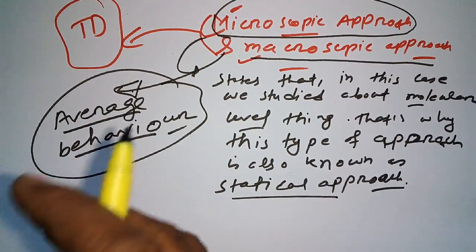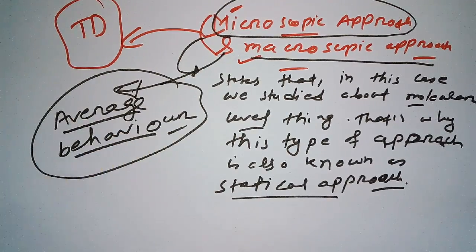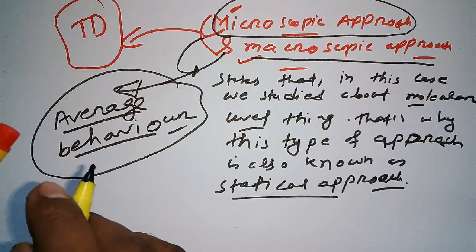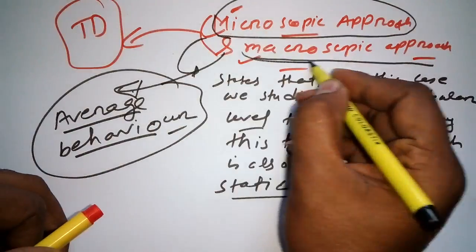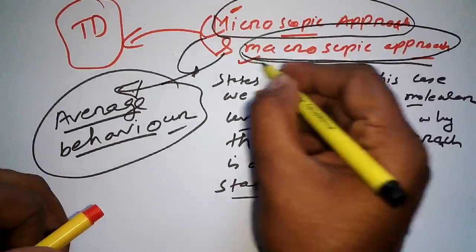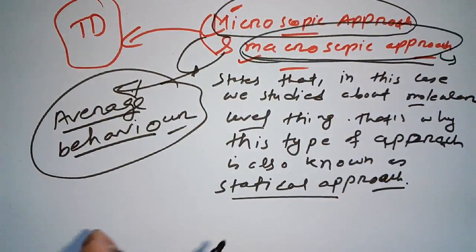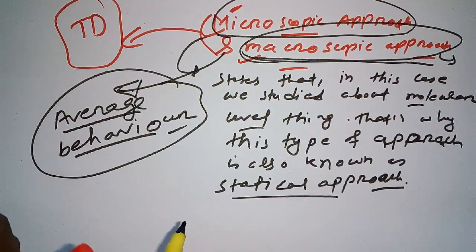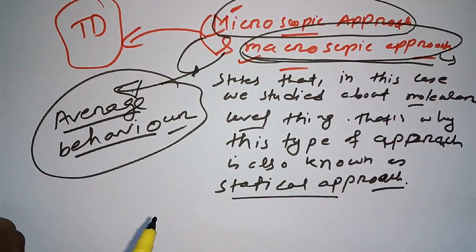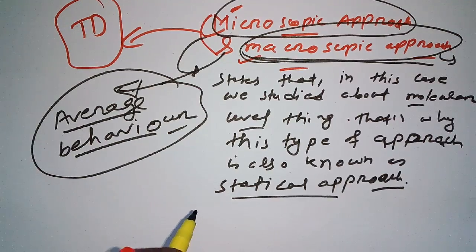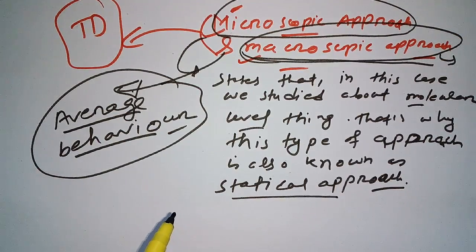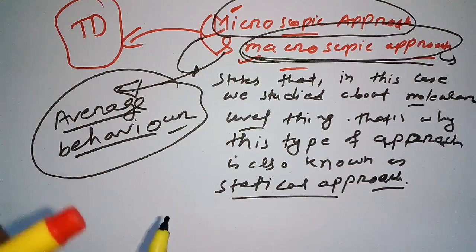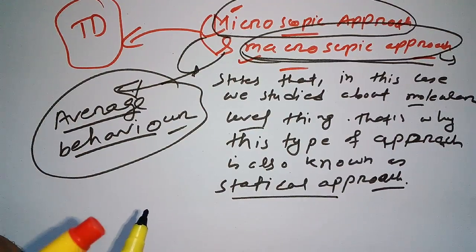Now, which type of approach do we study in thermodynamics? It is the macroscopic approach. In thermodynamics we study the macroscopic approach. There is another thing we study which I will discuss in my next video.